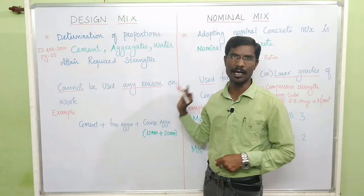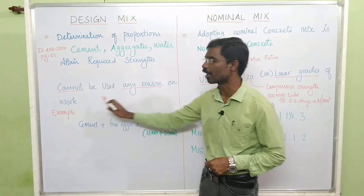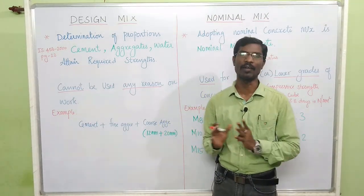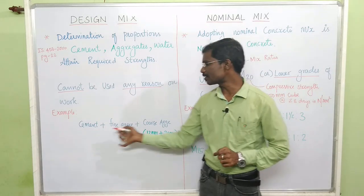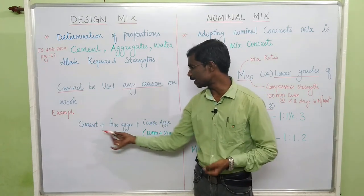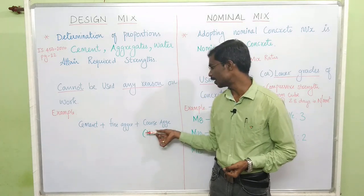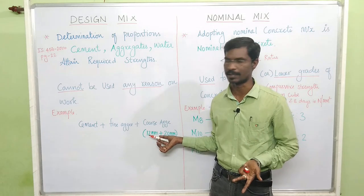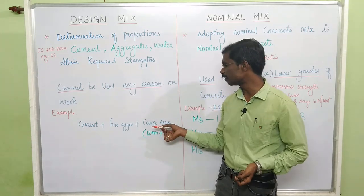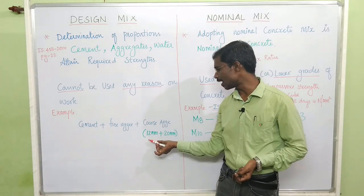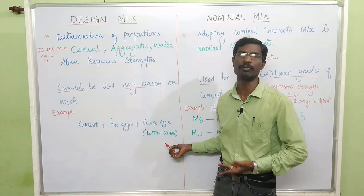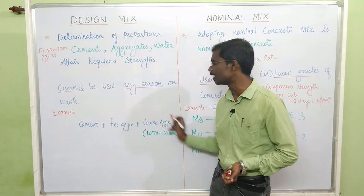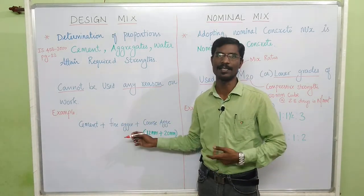Design mix concrete cannot be used for any reason after work. The design mix is determined for different ratios — first is cement, second is fine aggregate, and third is coarse aggregate. Unlike nominal mix, in design mix we will use coarse aggregate of 12mm as well as 20mm, and sometimes 6mm also. This kind of ratio we will design, and this is called design mix concrete.